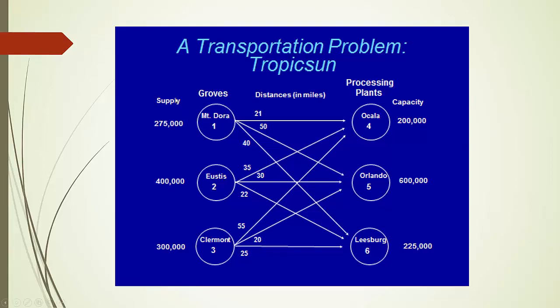Citrus in Mount Dora can be transported to any of locations 4, 5, and 6. It is also true for citrus in location 2, Eustace. In this problem, the company Tropic Sun would like to minimize the total transportation cost. Because the trucking company charges a flat fee for each bushel mile, it is the same as minimizing the total bushel miles.